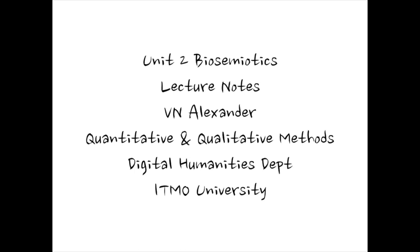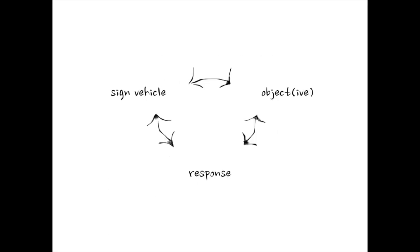This is an explanation of the practical we did for Unit 2. According to biosemiotics, there are three parts to every sign relation — not just two parts like the word 'tree' and the idea of a tree. According to biosemiotics, there is a sign vehicle, a response, and an object or objective. In this practical, you're going to learn how to identify those three parts.